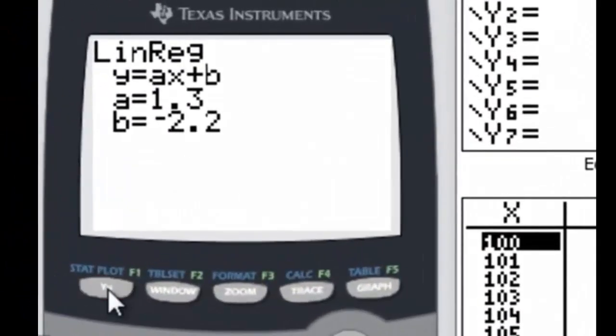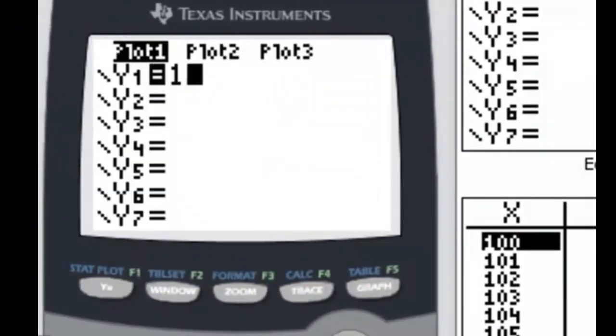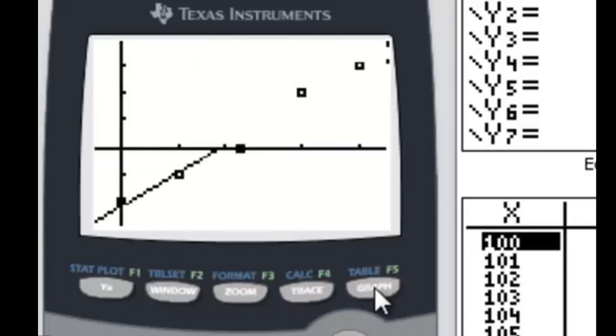Now I go into y equal, and I have 1.3x, that's ax, minus 2.2, because it was negative 2.2 for the b. And now I can hit the graph key, and my line will go on top of my data.